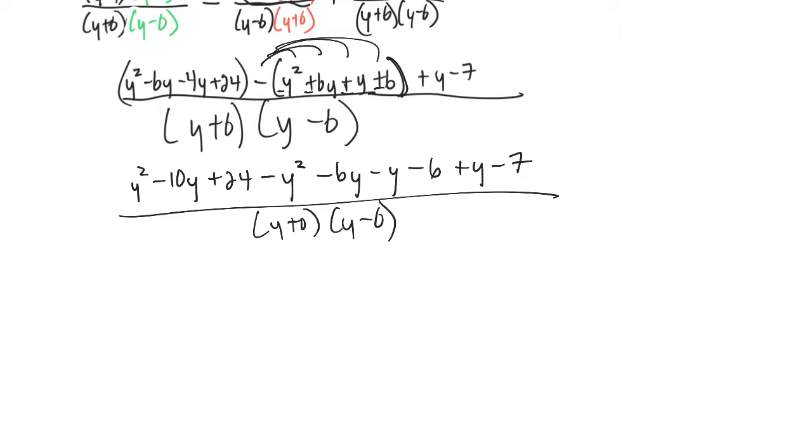Now let's collect like terms up top. Here's a y squared minus y squared. Ooh, nice, go on. Okay, minus 10y minus 6y is minus 16y, minus another y is minus 17y. Ooh, plus a y would be minus 16y. So I have a minus 16y. So all my y's I've taken care of.